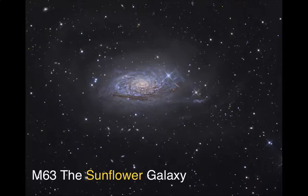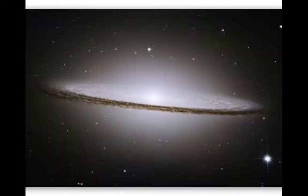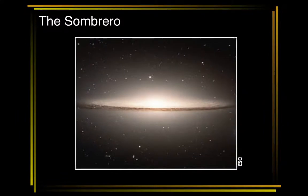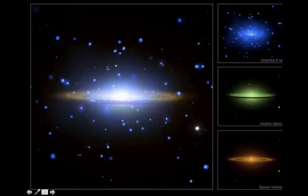The Sunflower Galaxy has a lot of dust and gas, so we can assume it's making a lot of new stars. And one of my all-time favorites, the Sombrero Galaxy — a beautiful edge-on view. Here's a composite picture of Sombrero in X-rays, infrared, and visible light all together, showing detail that our eyes alone could not see.